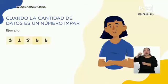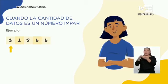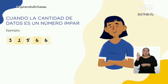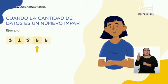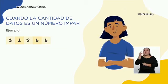La mejor forma de aprender es haciéndolo nosotros mismos. Por ejemplo, me piden hallar la mediana de los datos: 3, 1, 5, 6, 6. ¿Cuántos datos tenemos aquí? 1, 2, 3, 4 y 5 datos. La cantidad de datos es un número impar. Así que este caso está facilito. Paso número 1: ordenamos de menor a mayor o de forma ascendente.